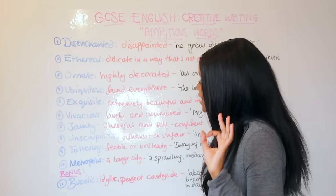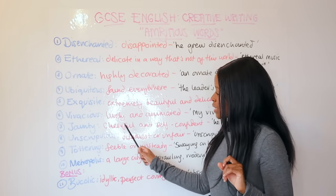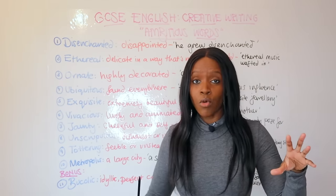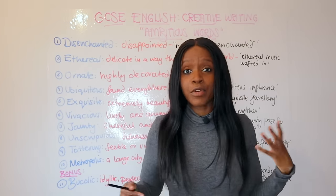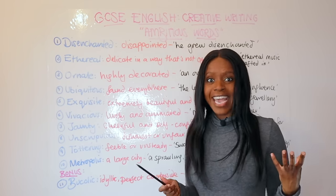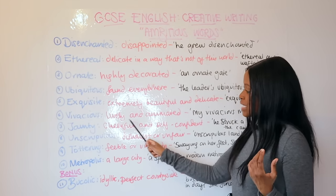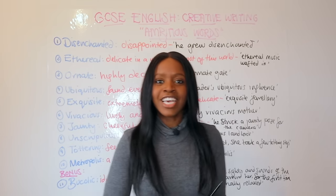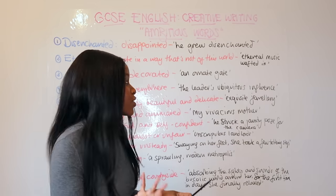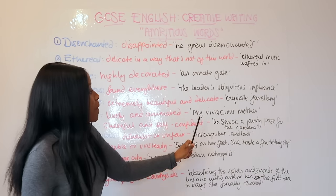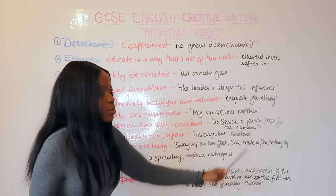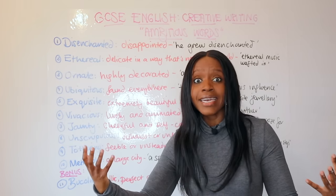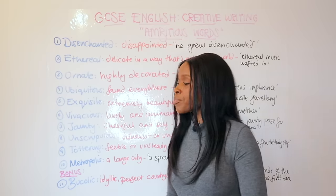The sixth word is 'vivacious,' which means someone — or even an animal or pet — that is very lively and animated. You can describe relatives, for example, saying 'my vivacious mother,' or talk about a vivacious woman. Your protagonist can also be vivacious.